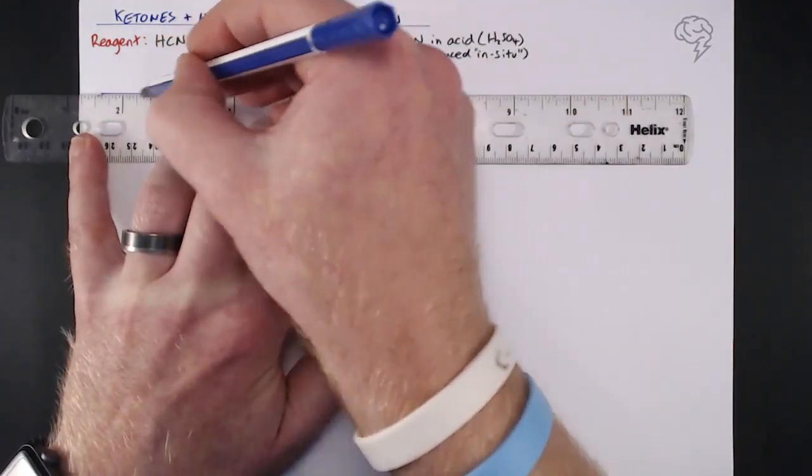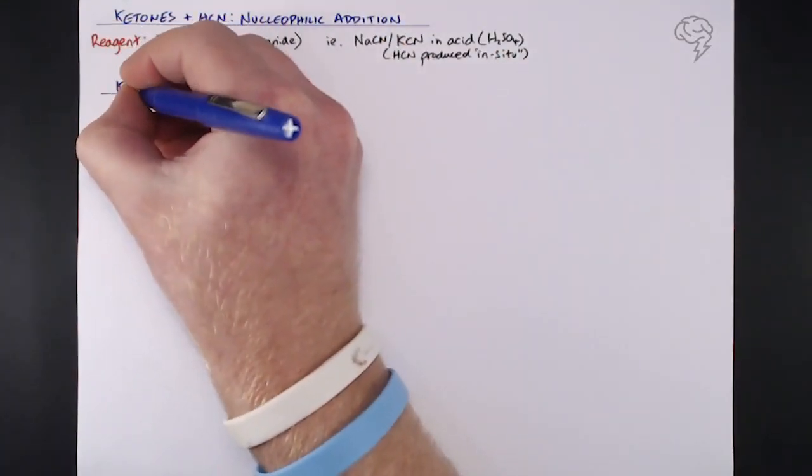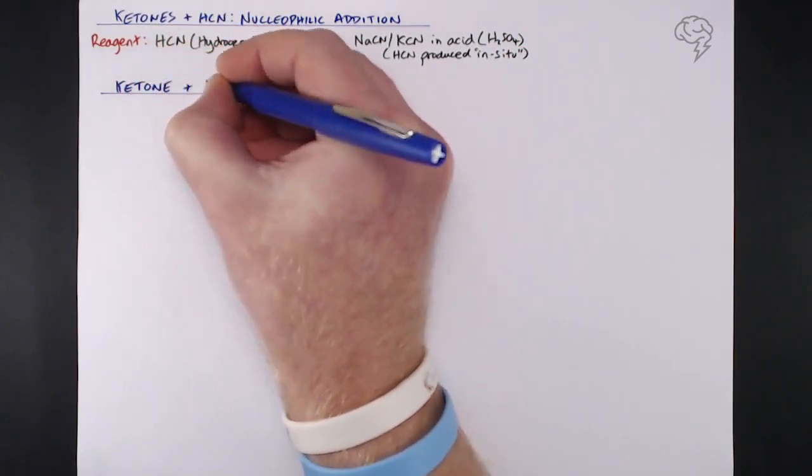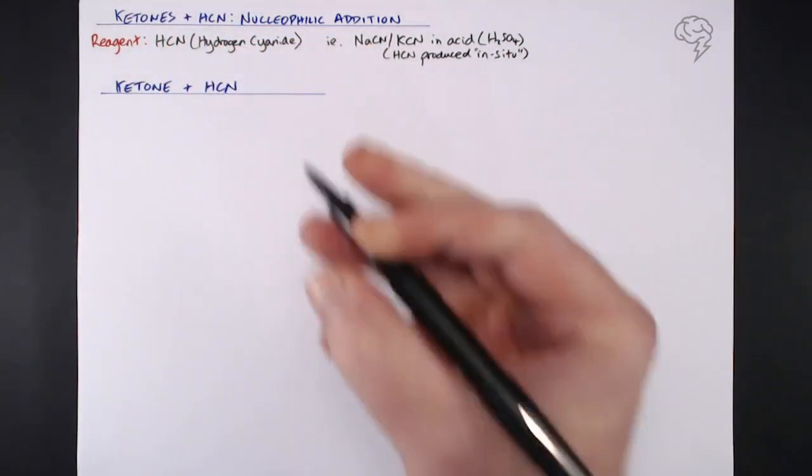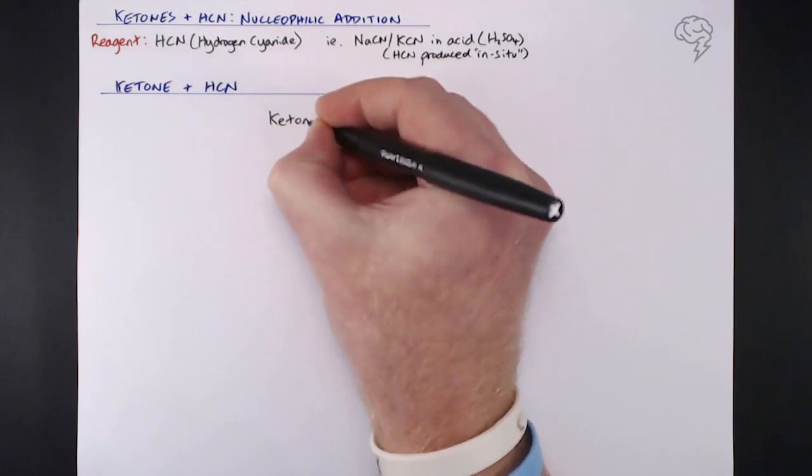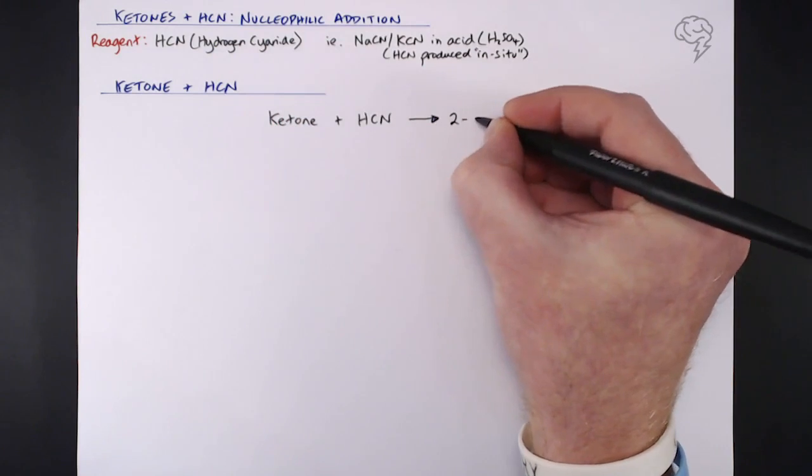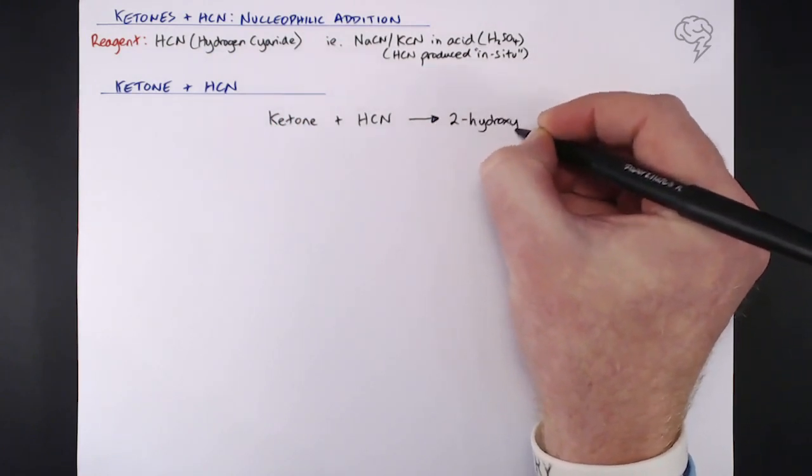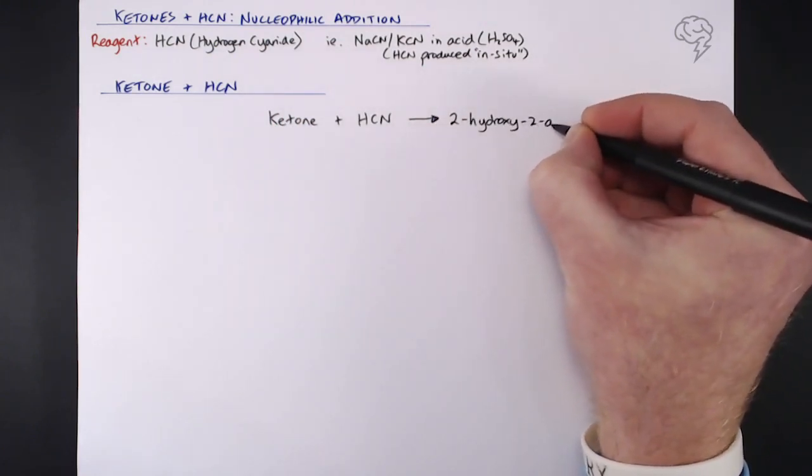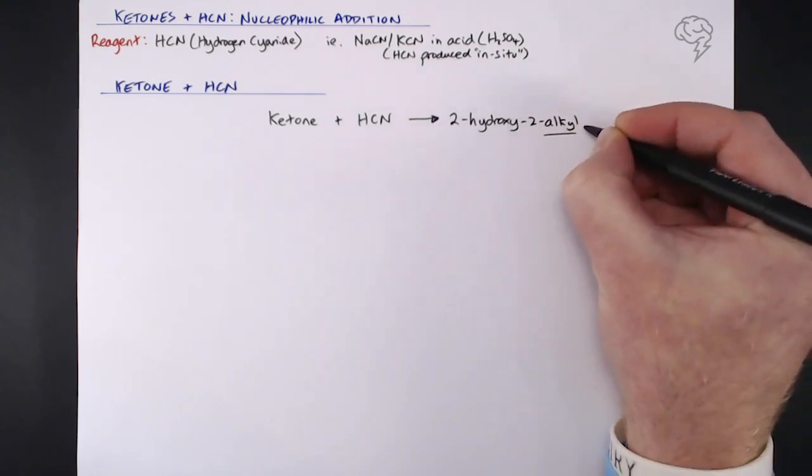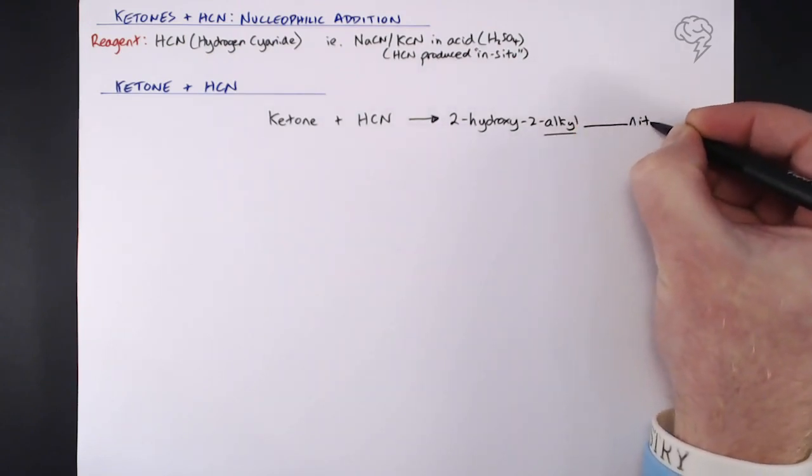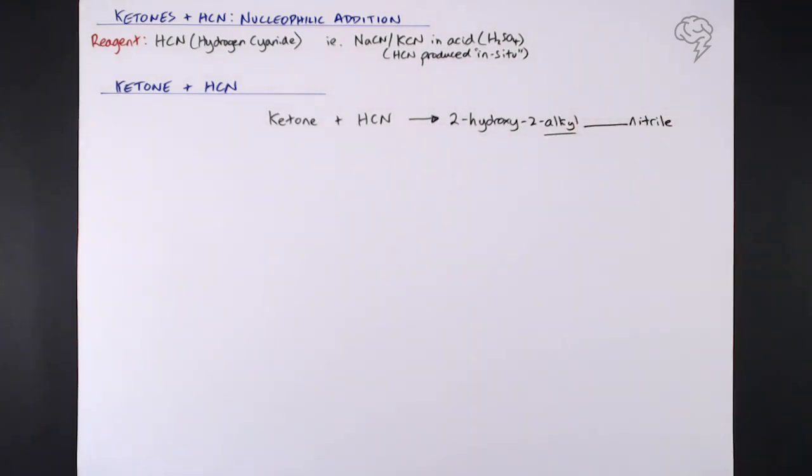When we take our ketone and react it with hydrogen cyanide, they come together just like with an aldehyde to form a 2-hydroxy nitrile. We still get that 2-hydroxy, but this time we get an added bonus: a 2-alkyl group as well. That alkyl group can be methyl, ethyl, or maybe propyl if it's a massive molecule, but usually methyl or ethyl.